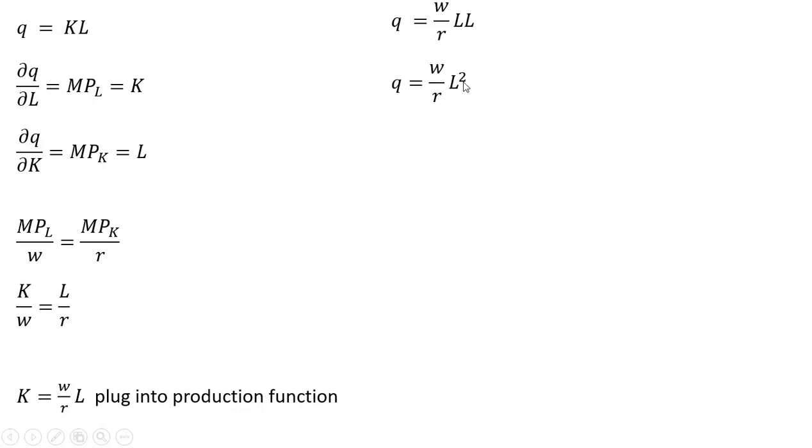So simplifying, we've got L squared now on the right-hand side. Multiplying through by R divided by W leaves us with this result. And now taking the square root of both sides, get rid of this L squared term. We take the square root of both sides, and we get this result. I'm going to call it L star.